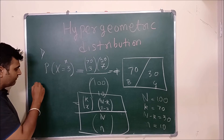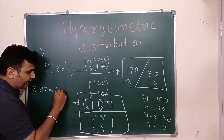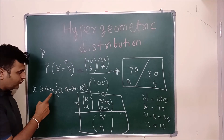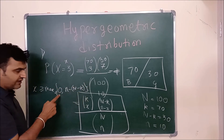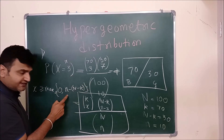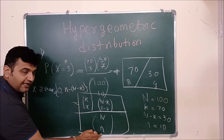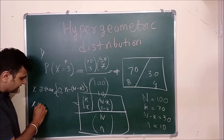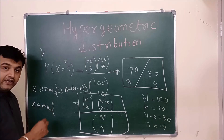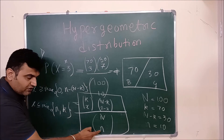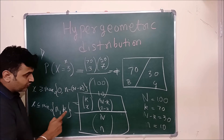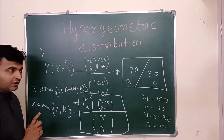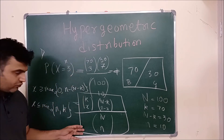What values will X take? It will always be greater than or equal to the maximum of zero and n minus (N minus K). Obviously X is always greater than or equal to zero, but N minus K is the number of failures, so from the sample you remove the failures and what is left must be successes. X is also always less than or equal to the minimum of n and K, because X cannot exceed the sample size n, and there are only K successes available. So X always lies in this interval.